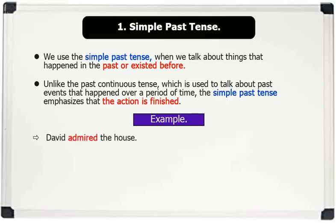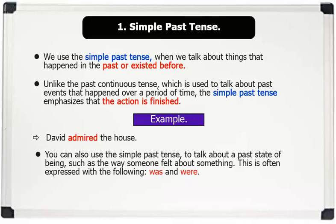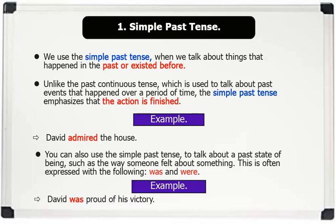Example: David admired the house. You can also use the simple past tense to talk about a past state of being, such as the way someone felt about something. This is often expressed with the following verbs: to be — was, and were. Example: David was proud of his victory.